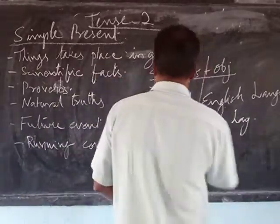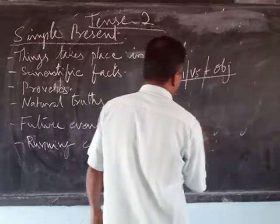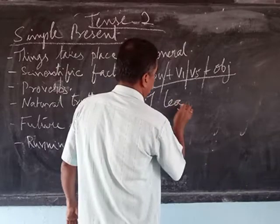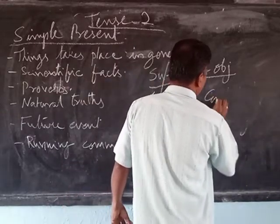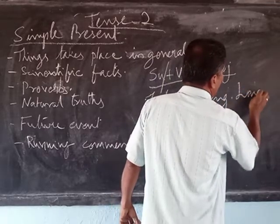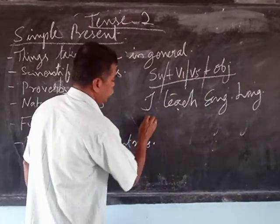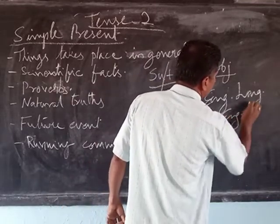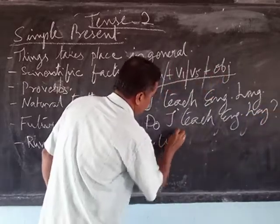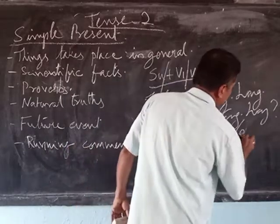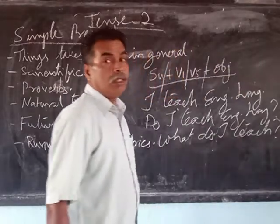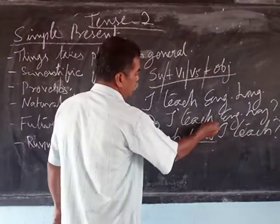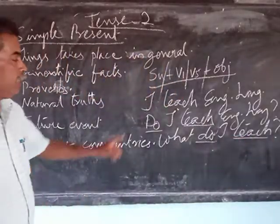Now, while making a simple sentence into a question — for example, 'I teach English' — we can ask 'Do I teach English language?' or 'What do I teach?' In either case, when you have 'do' in the question, the verb remains in V1 form. This is how we form questions.